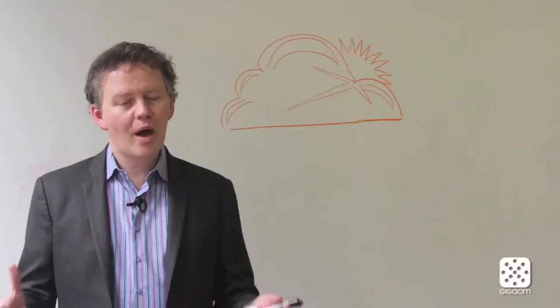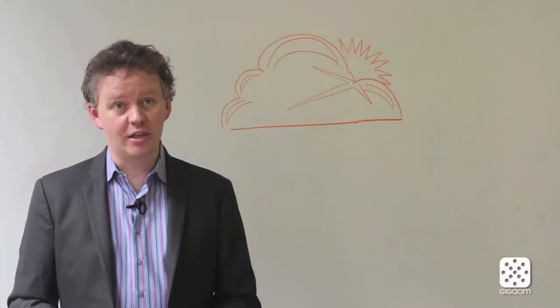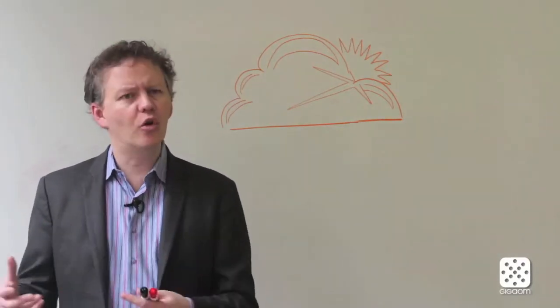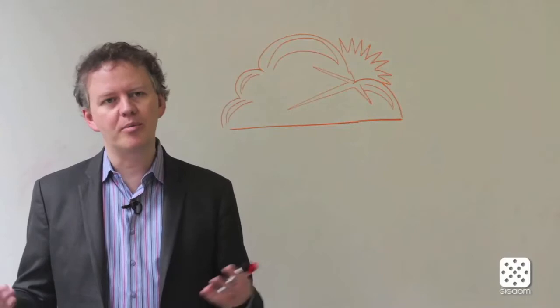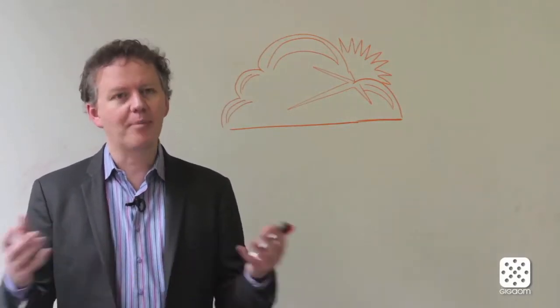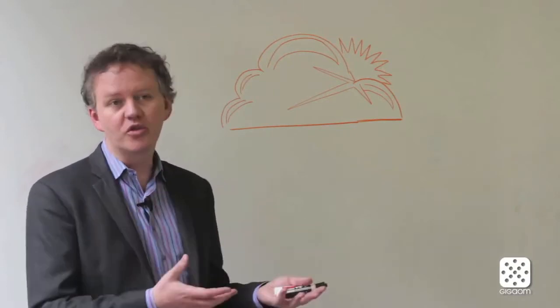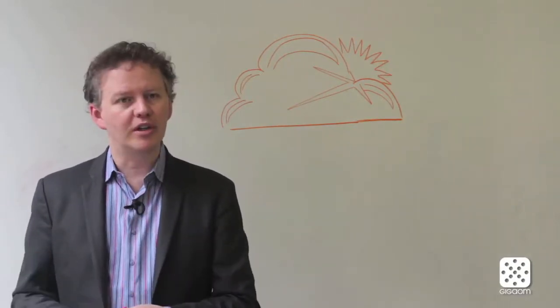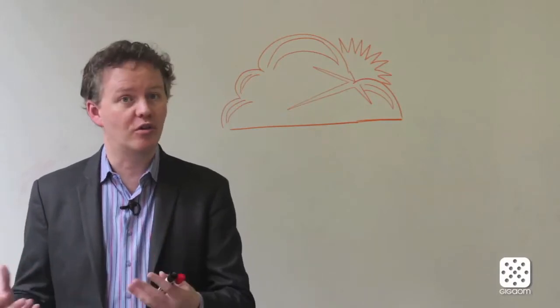So the web has always had three core tiers. There's a data tier and in the old school world that's something like EMC. In the new school world it would be something like Amazon Web Services or S3 or Rackspace's Cloud. There's also an application tier which in the old school world might have been a Java app server and the new school world is something like Heroku which is serving applications out.